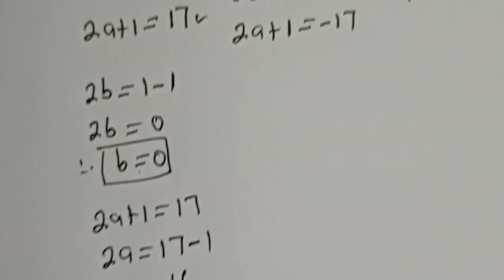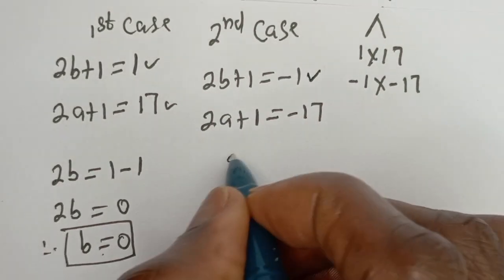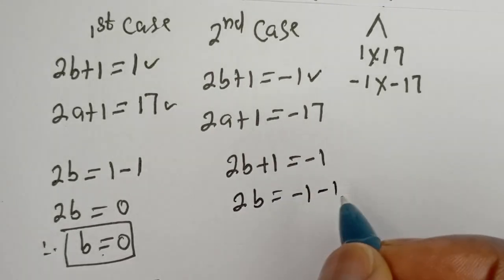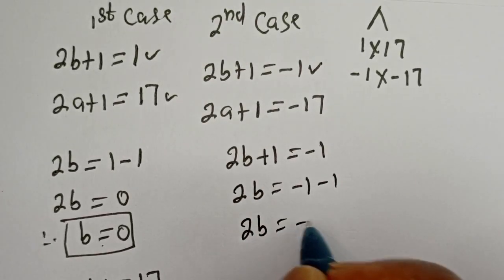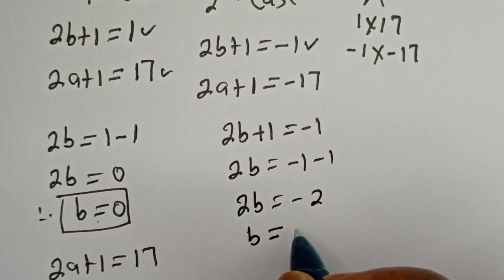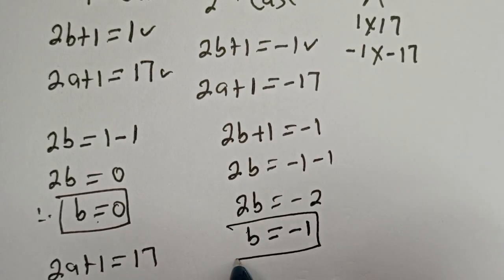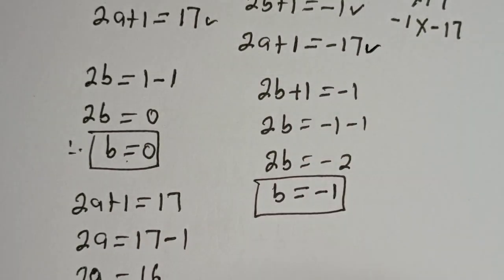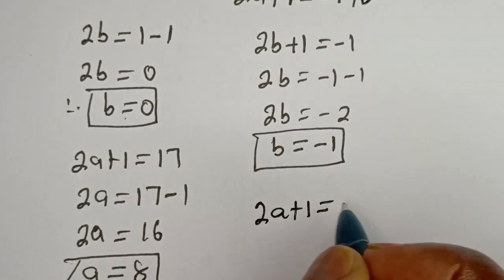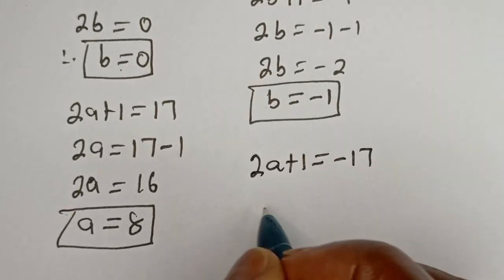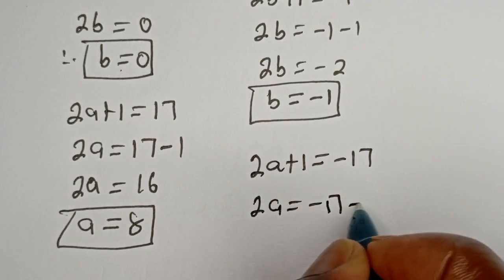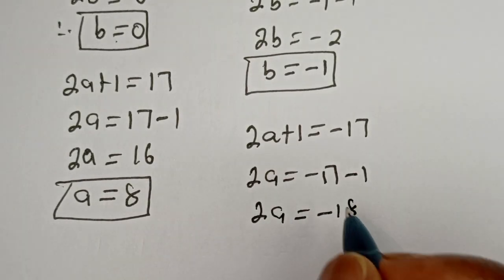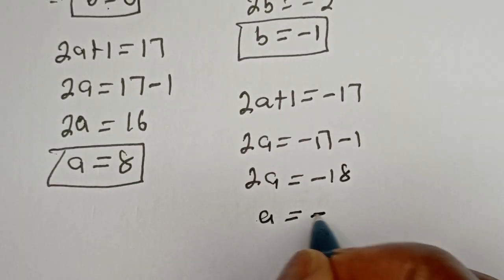From the second case, 2b plus 1 is equal to minus 1, then 2b is equal to minus 1 minus 1, so 2b is equal to minus 2, therefore b is equal to minus 1. And from 2a plus 1 is equal to minus 17, then 2a is equal to minus 17 minus 1, so 2a is equal to minus 18, therefore a is equal to minus 9.